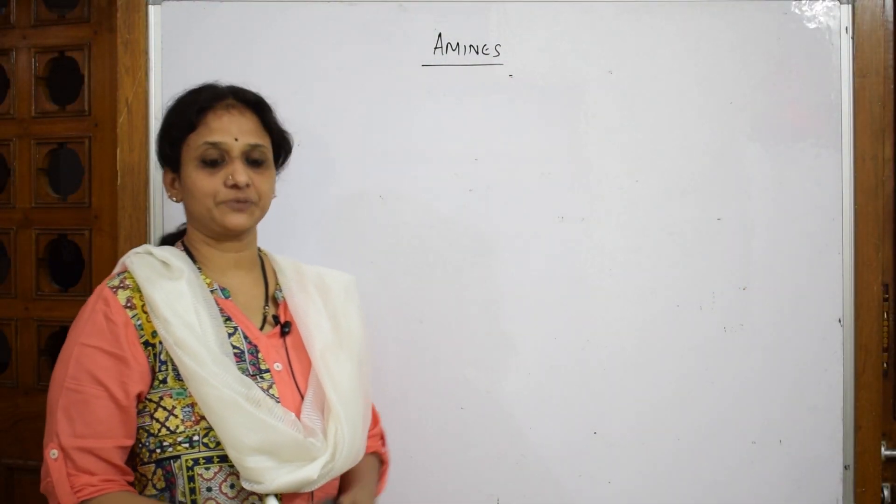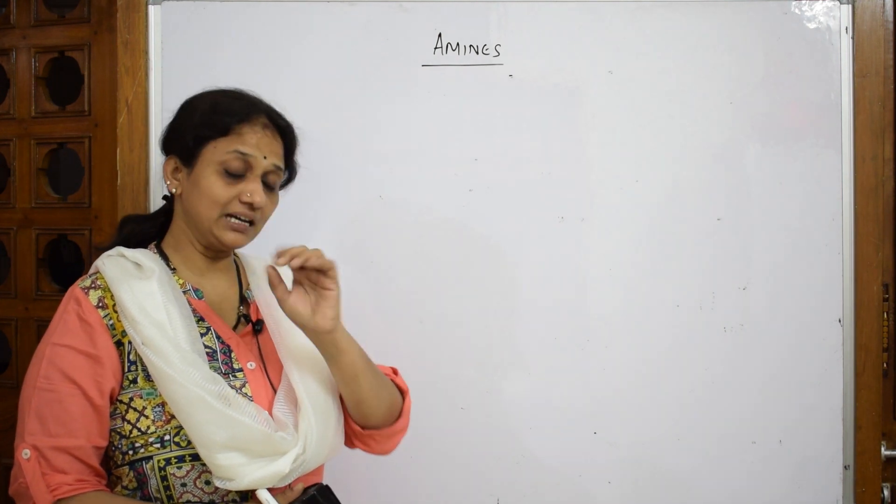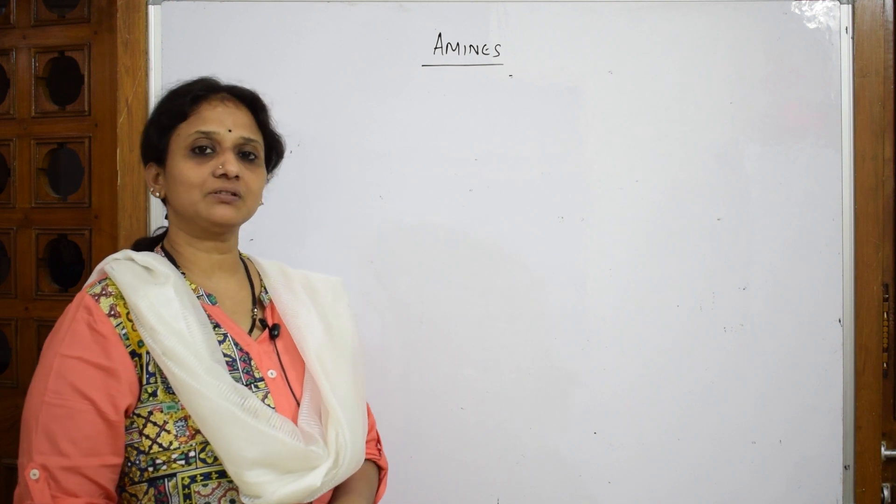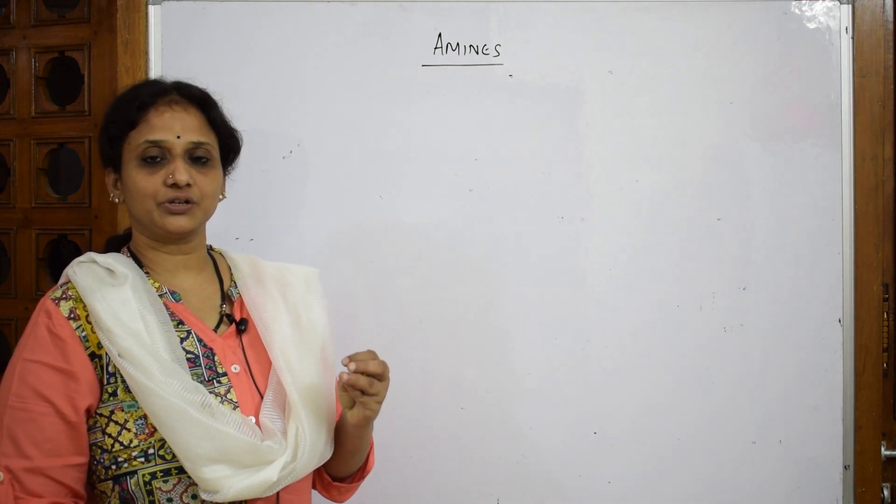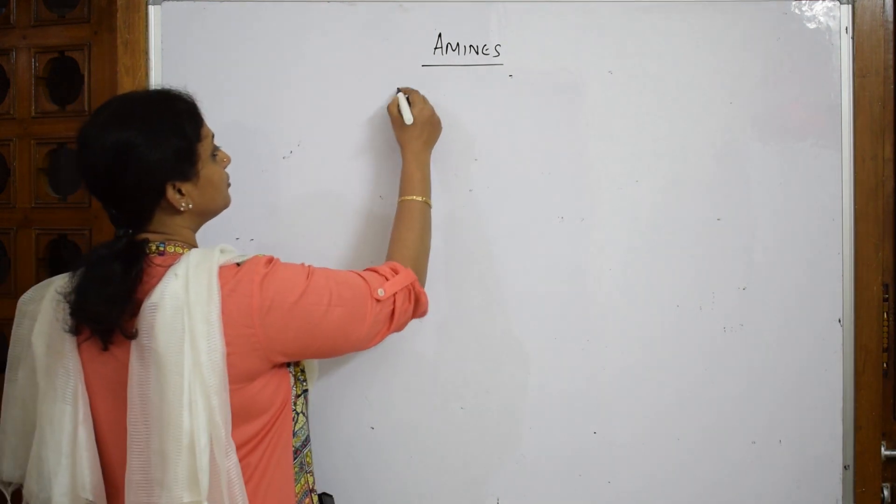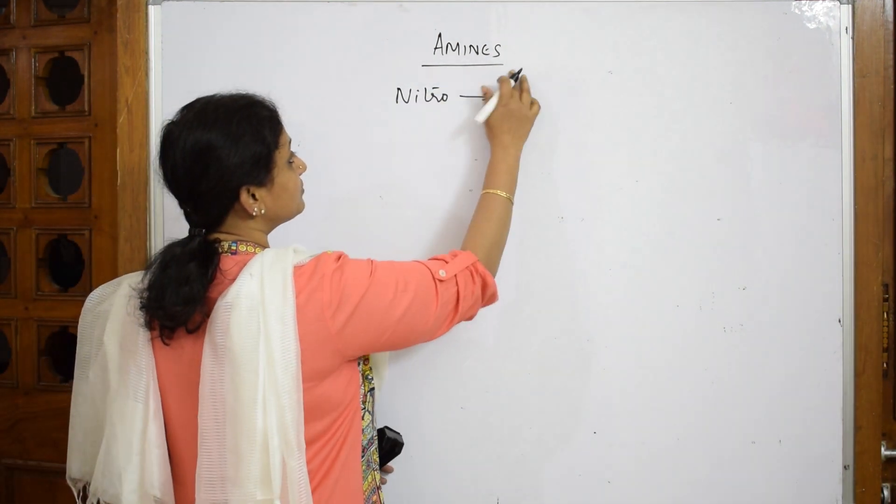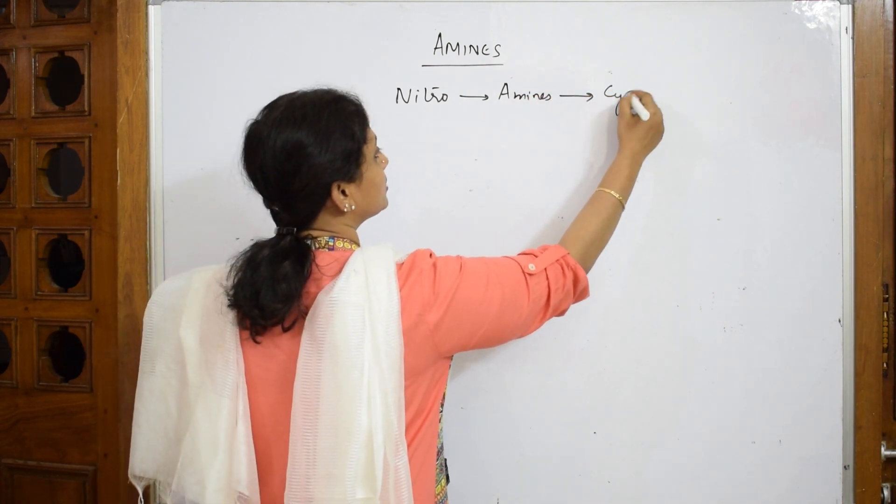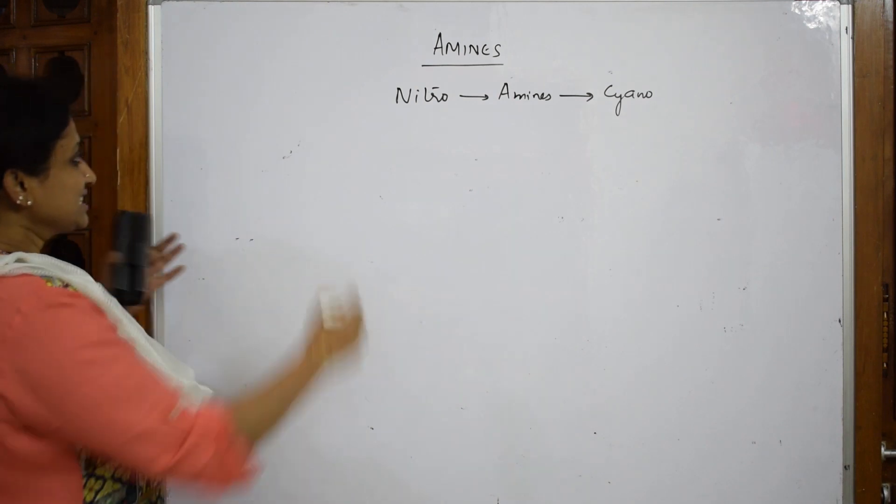Now let us start with the chapter. I'll be doing the chapter in a different way. I'll first give you a link about how to remember the chapter. Basically in this chapter, you're going to study nitro compounds, amines, and cyano compounds. Always remember: whenever you are given a nitro compound, nitro is first converted to amines, amines is then converted to cyano compounds. This is your sequence.